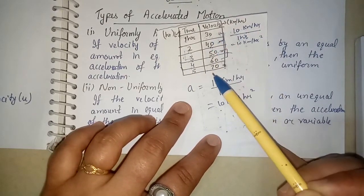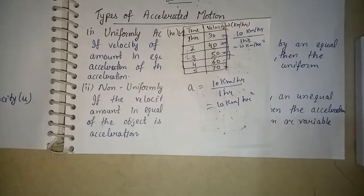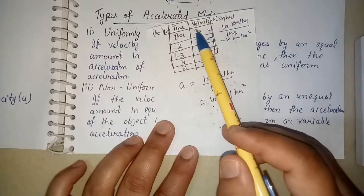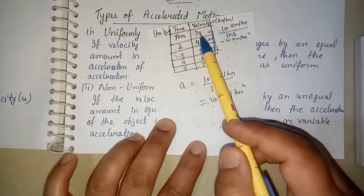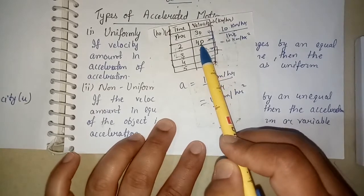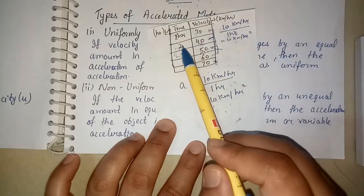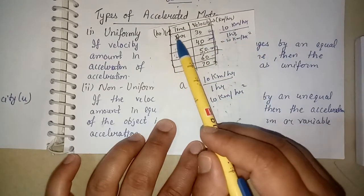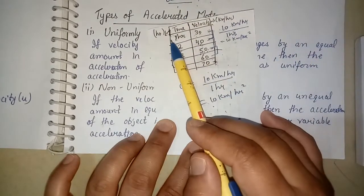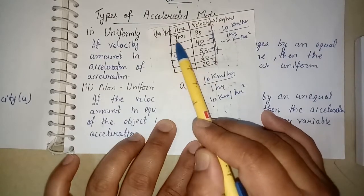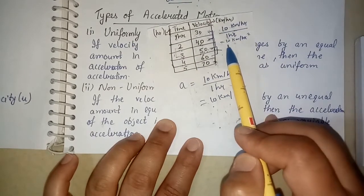Now the velocity is changing, so we will calculate the acceleration. Acceleration is change in velocity upon time. In the time interval from 1 hour to 2 hours, the change in velocity is 40 minus 30, that is 10 km per hour, and the time interval is 1 hour. So acceleration is 10 divided by 1, that is 10 units.